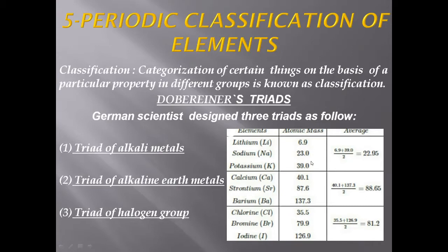Whatever Dobereiner provided here is confirmed. Next, he gave the triad of alkaline earth metals. According to the properties of this triad, all these alkali metal elements are highly reactive. When they react with water, they form a water-soluble base — that's why they are called alkali metals. They react with oxygen to form basic oxide, show electropositivity, and their valency is +1 for all these elements.